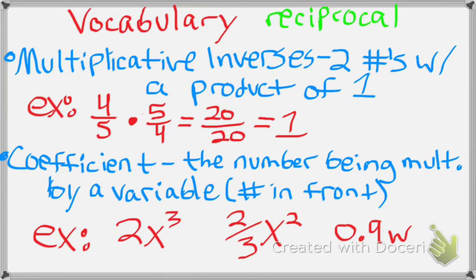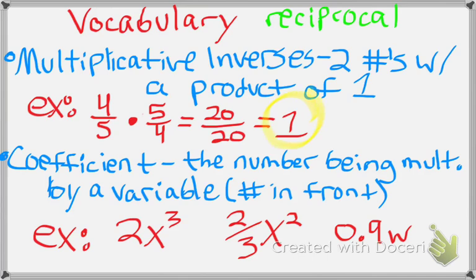In other words, if you take four-fifths and you flip it, it becomes five over four. What the multiplicative inverse property says is that if you multiply those together, it will equal one. So, four-fifths times five over four — multiply straight across — four times five is twenty on top, five times four is twenty on the bottom. Twenty over twenty equals positive one.